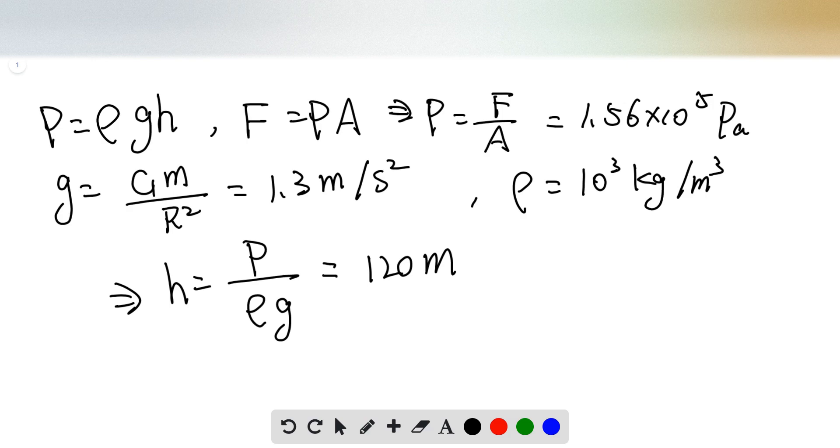And the gravitational acceleration is equal to gravitational constant G times the mass of Europa divided by the radius of the planet, and is equal to 1.3 meters per second squared.